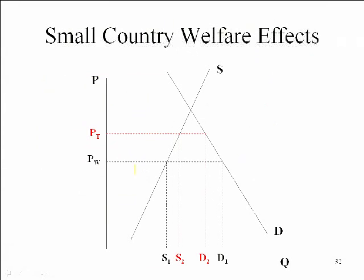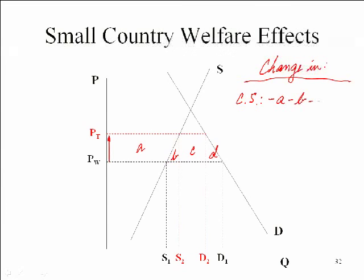Now let's think about the welfare effects in this small country. Let's identify areas A, B, C, D. The change in consumer surplus: since the price of tires went up to P sub T, consumer surplus went down by A, B, C, and D — the change in price from P_T to P_W under the area of the demand curve. Consumers got hosed. What happens to producer surplus? Producers are better off by area A.